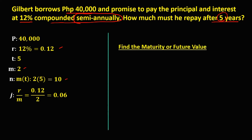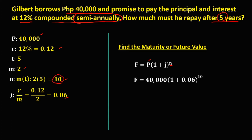Now we can solve for the maturity value or future value using the formula. The future value equals the principal times (1 plus the interest per period) to the power of n. So we have 40,000 times (1 plus 0.06) to the power of 10.